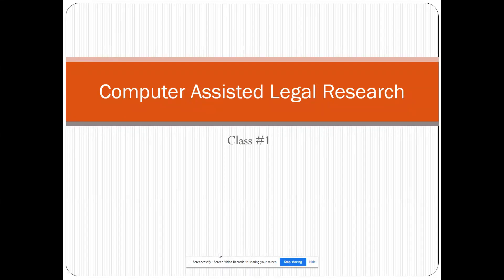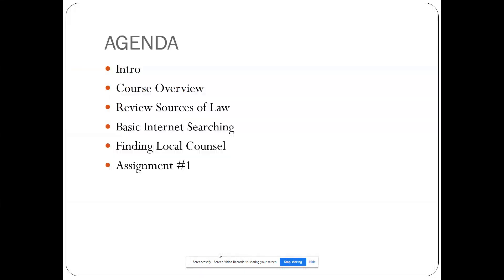Hi guys, welcome to our first class for the summer session of Computer-Assisted Legal Research. I'm going to do our course overview, talk about sources of law, internet searching, finding local resources, and the assignment. We go through Westlaw, Lexis, then free sites, some government sites, and then other paid databases that are not Lexis and Westlaw. We learn about citation — it's more of a skills-type class than a theoretical type class like Fundamentals was.